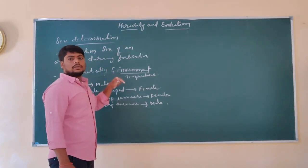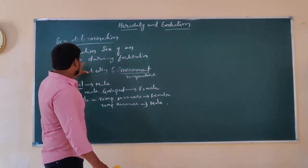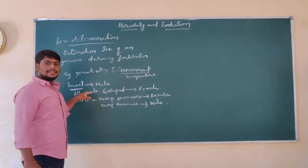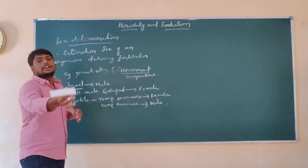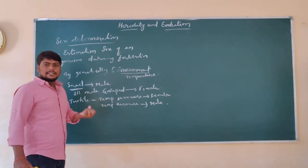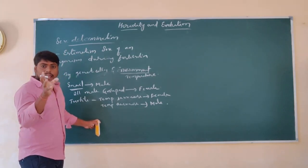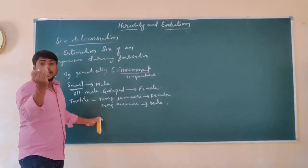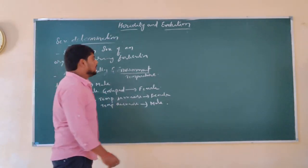The environmental factor also plays a key role in estimation or determination of the sex of an individual. In snail, the environment plays a key role in development of gender — if all male snails move together, they convert into female, and when they move away, they convert back to male. In case of tortoise, they lay eggs, and during incubation, if the temperature increases, the egg hatches and produces a female tortoise; if the temperature is less, it hatches into a male.